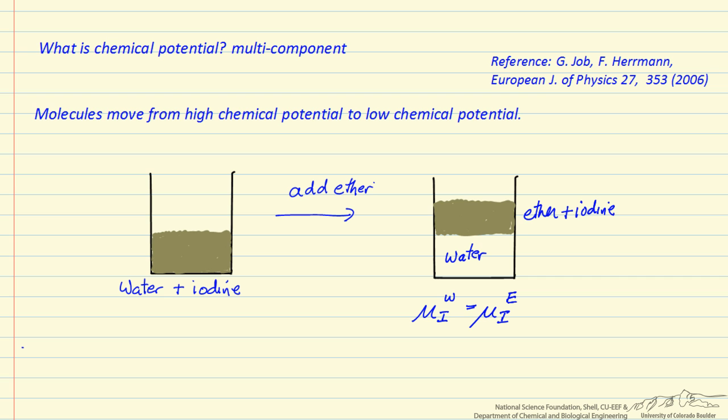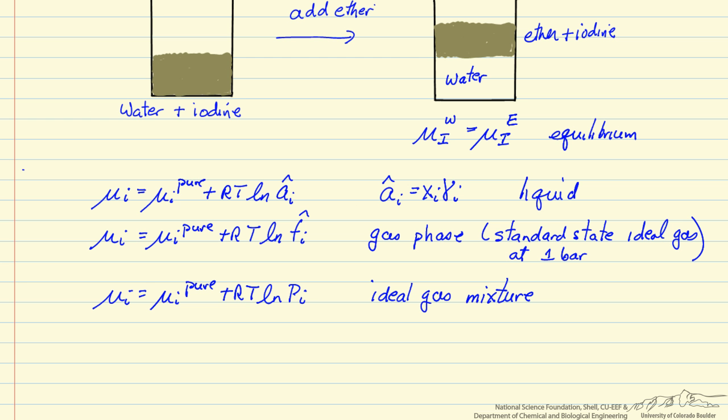So this is the chemical potential for the iodine. That's then our criteria for equilibrium, and we can move against the concentration gradient. So I've written equations for chemical potential.